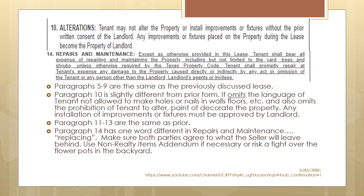Paragraph 10 states that the tenant may not alter the property or install improvements or fixtures without written consent of the landlord. This is slightly different from the previous form, because the buyer's temporary lease contained language not allowing the tenant to make holes or nails in the walls, floors, etc. That language doesn't pertain in this situation, so it's left out of paragraph 10.